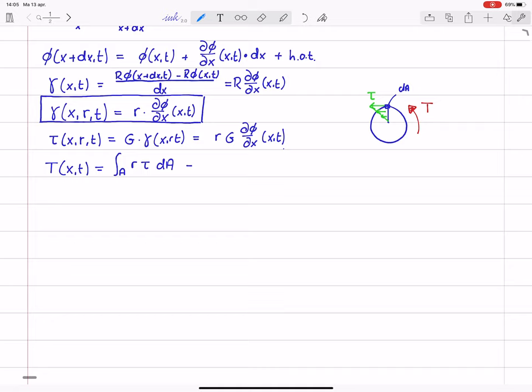So if we substitute the relation for τ here, we take outside of brackets terms that do not depend on r, on the location of the cross sectional area. We get G times this integral over the cross section of r squared dA times dφ/dx, which still depends on x and t. Now this integral that we see here is actually a property of the area. We call it the torsion constant, and that is denoted by J, and we define it as the area integral of r squared dA. And for this case, for circular cross sections, it is actually equal to the polar moment of inertia. It is sometimes referred to as that, but I will just simply call it the torsion constant.